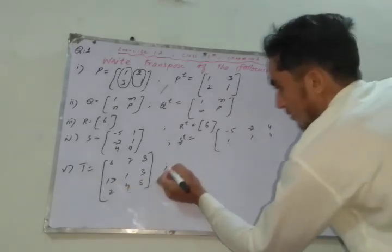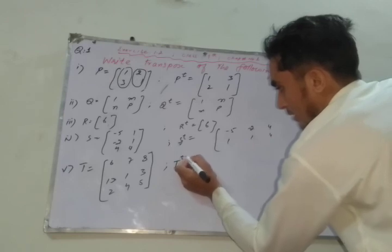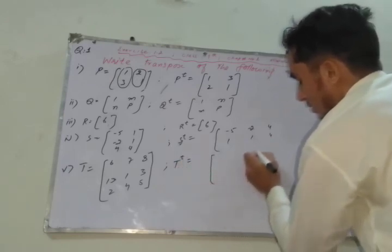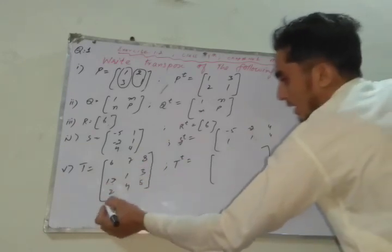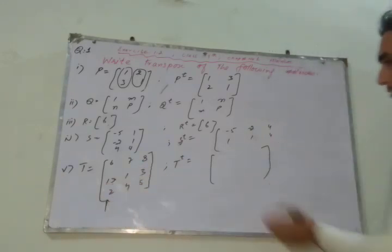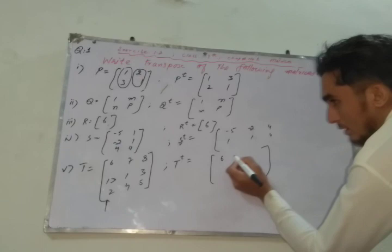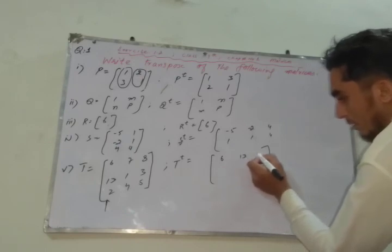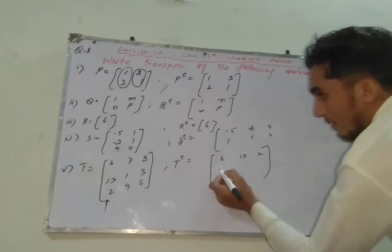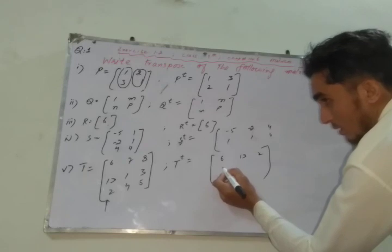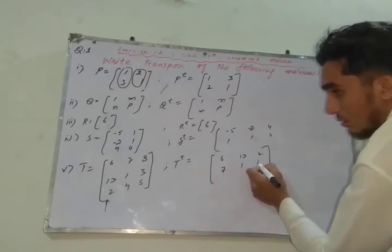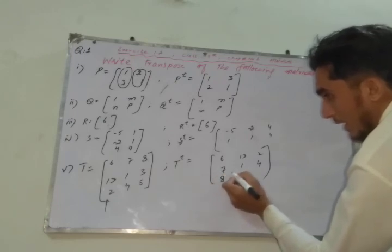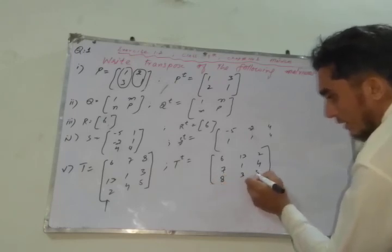Transpose values. Column one is equal to column one, that is row. Six, thirteen, two. Seven, one, four. Eight, three, five.